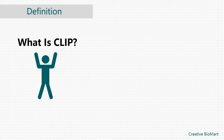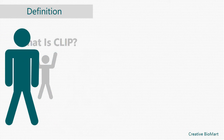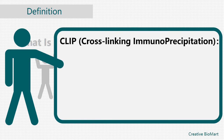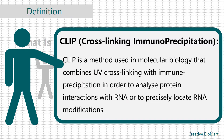First, Definition. What is Cross-linking and Immunoprecipitation? Cross-linking and Immunoprecipitation, called for short CLIP, is a method used in molecular biology that combines ultraviolet cross-linking with immunoprecipitation, in order to analyze protein interactions with RNA, or to precisely locate RNA modifications.